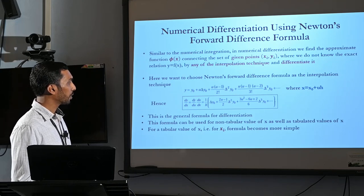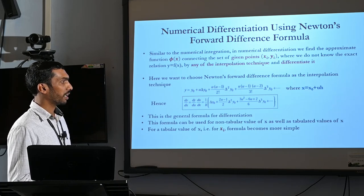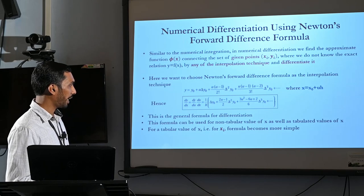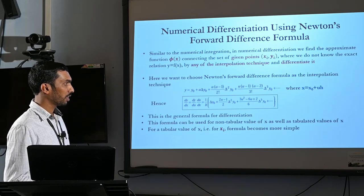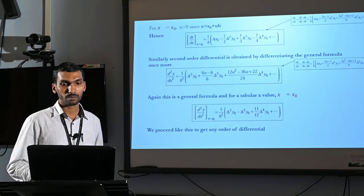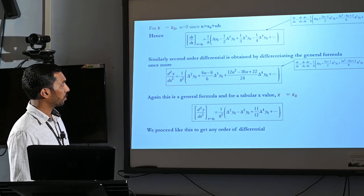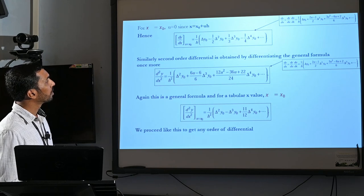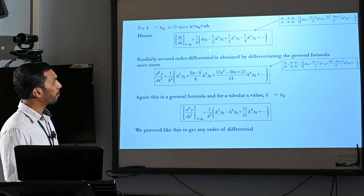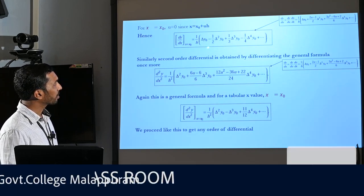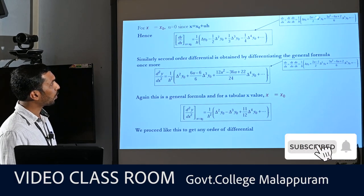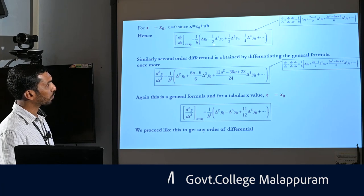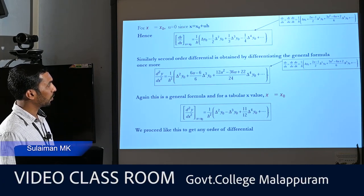This formula can be used for non-tabular values of x as well as tabulated values of x. For given tabular xi values, the formula becomes simpler. For x equal to x0, u becomes 0. So putting u equal to 0 in the general equation, we obtain: dy/dx equals 1/h times [delta y0 minus 1/2 times delta square y0 plus ...].